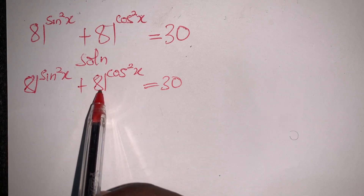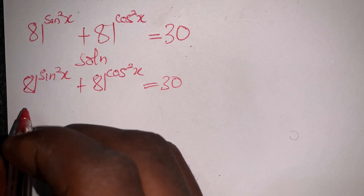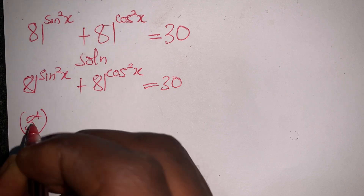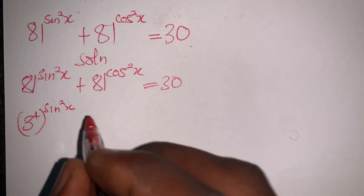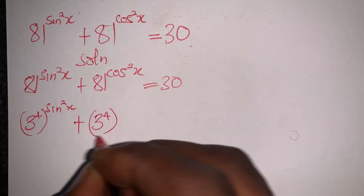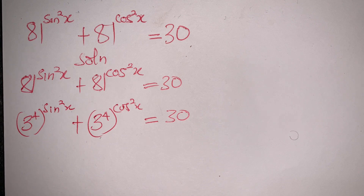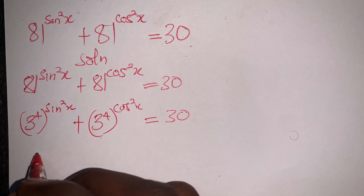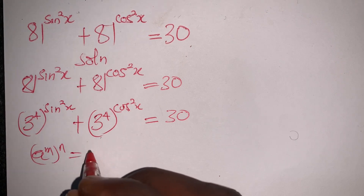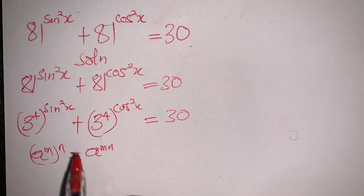I'll start by changing 81 to index form: 3^4 = 81. Therefore this becomes 3^4 all to the power sin²x plus 3^4 all to the power cos²x, equal to 30. From the law of indices, (a^m)^n = a^(mn), so I have 3^(4sin²x) plus 3^(4cos²x), equal to 30.